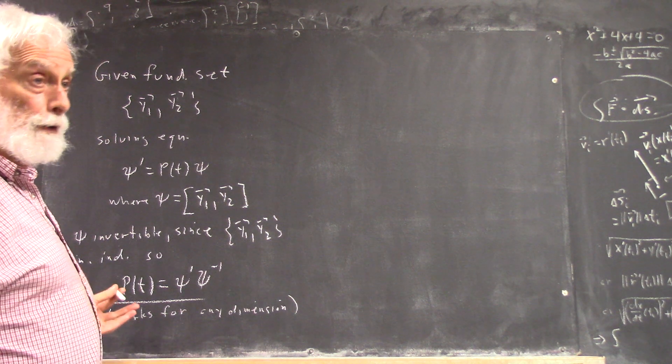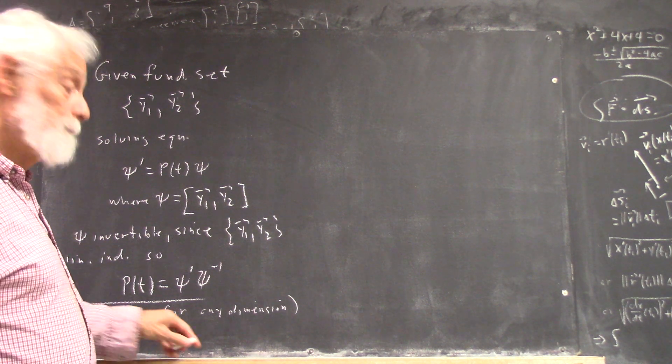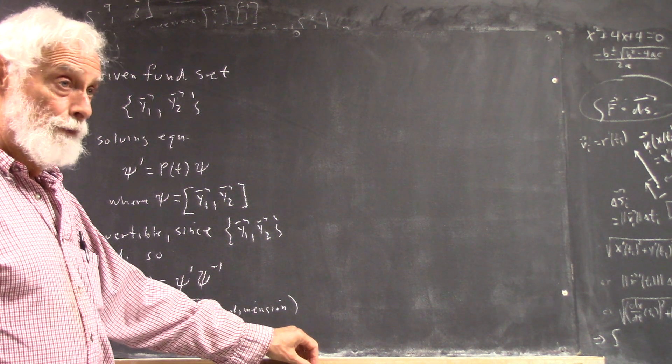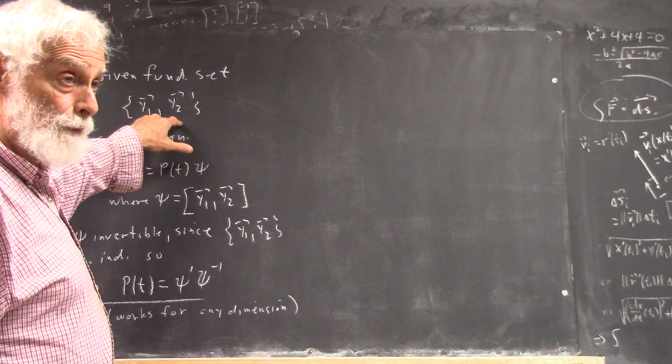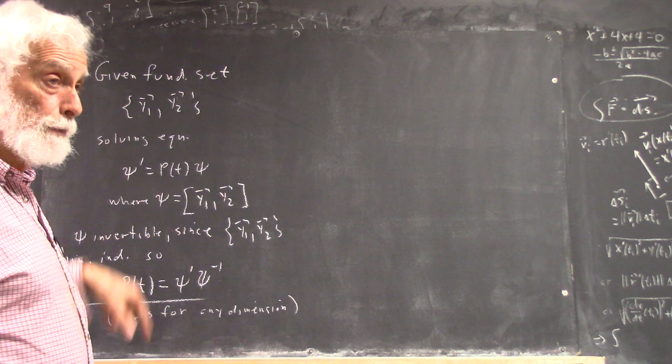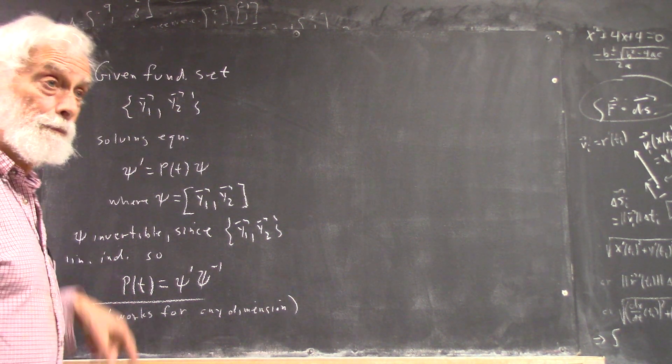So you're always going to get a square matrix. It's always going to be invertible. If you're given the fundamental set, your ψ matrix will be square and invertible. And you can do this.